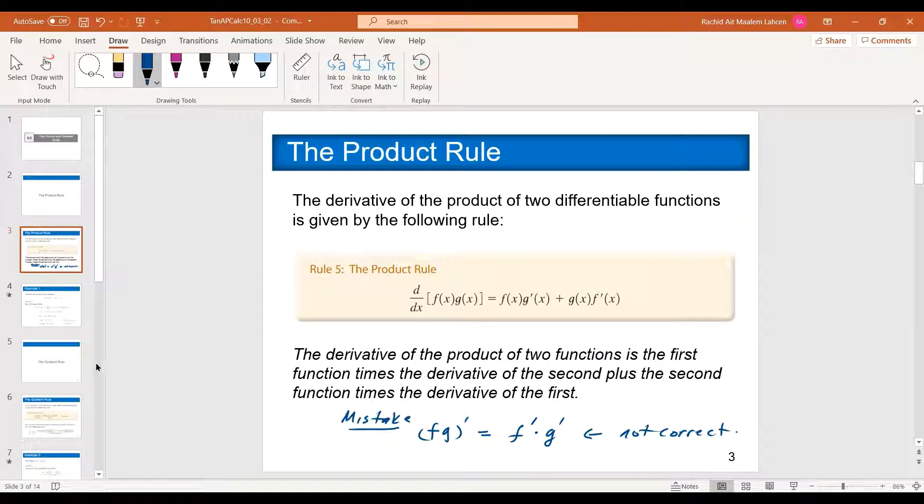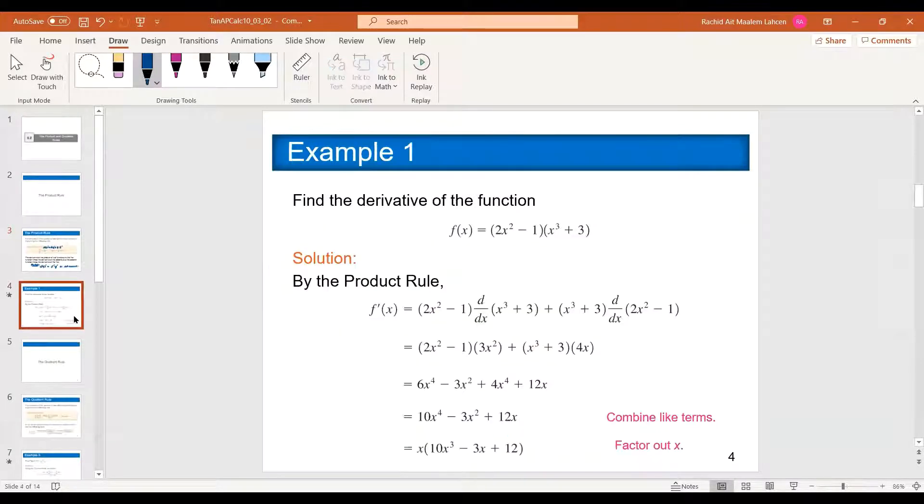The product rule, there is a justification to it, but you don't need it. A simple way, if you have f times g of x, you keep the first function, multiply by the derivative of the second one, you add, then you switch them. This is the second one, times the derivative of the first one. So that's what the product rule says.